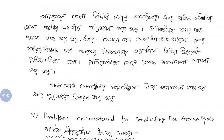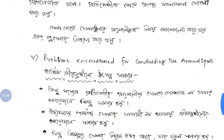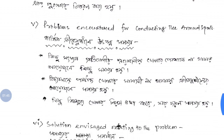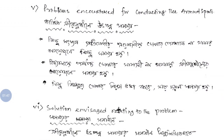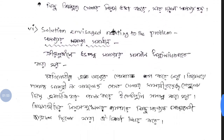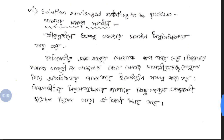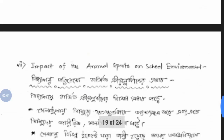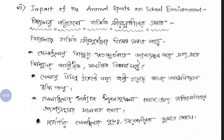Number 5: Problems encountered for conducting the annual sports. Number 6: Solution envisaged relating to the problem. Number 7: Impact of the annual sports on the school environment.